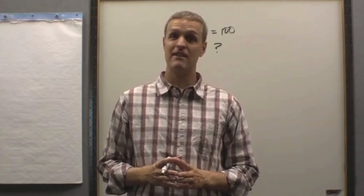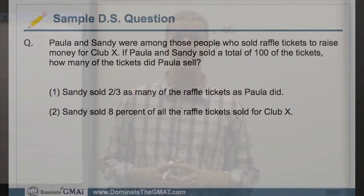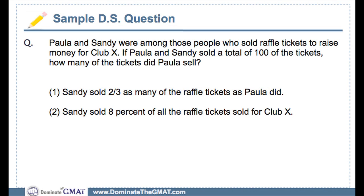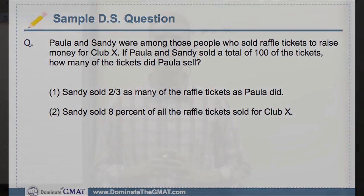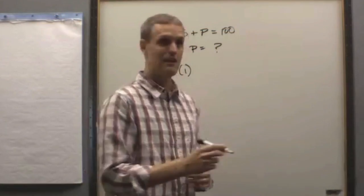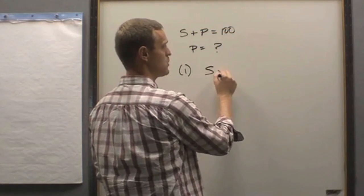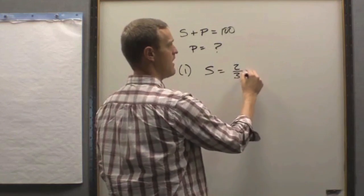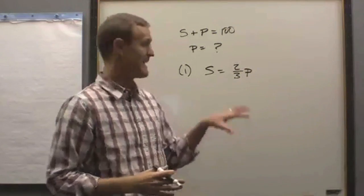And what does statement one give us? Well, take a look here again. Statement number one tells us that Sandy sold two-thirds as many raffle tickets as Paula. But by looking at that, that means that S equals two-thirds of P. That's essentially the equation.